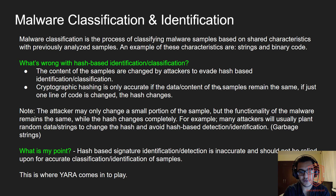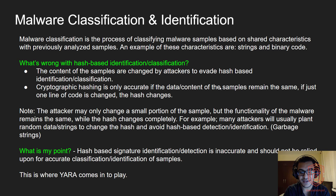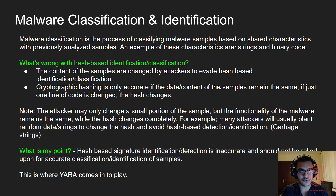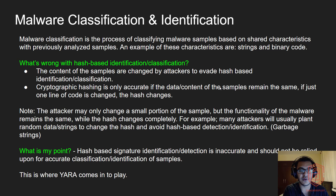My main point here is that hash-based signature identification or detection is completely inaccurate and should not be relied upon for accurate classification or identification of samples. When I mentioned it was quite accurate in previous videos, I was referring to identifying samples already out there for analysis. However, when dealing with samples from the wild, you shouldn't rely upon hash-based identification for your analysis.